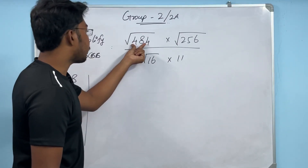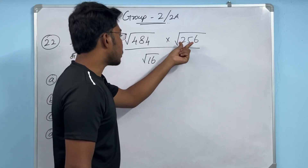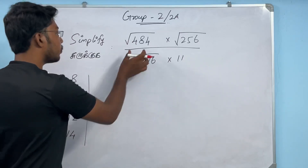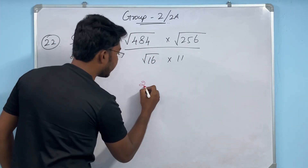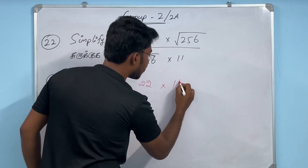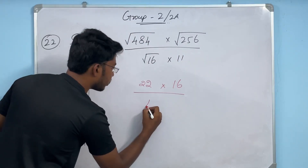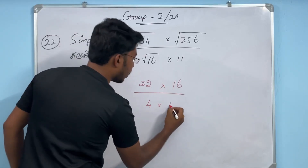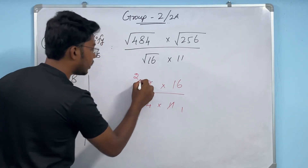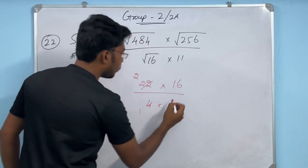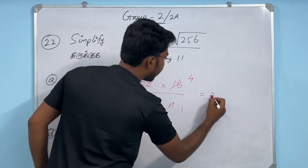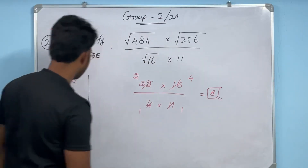Question: Square root of 484 × square root of 256, divided by square root of 16 × 11. Root of 484 = 22, root of 256 = 16, root of 16 = 4. So 22 × 16 divided by 4 × 11. 4 into 2 is 8. Answer: 8.